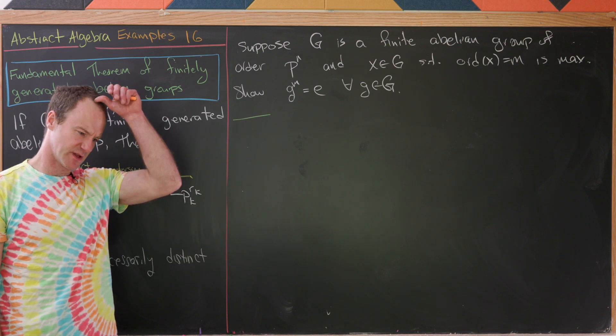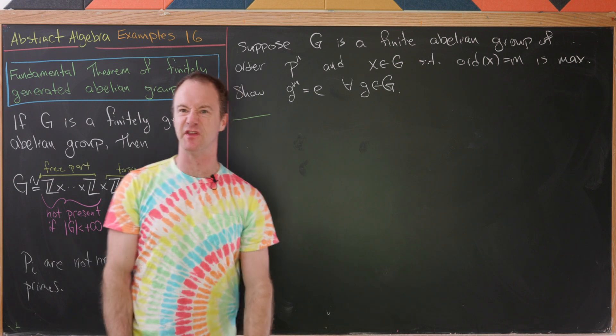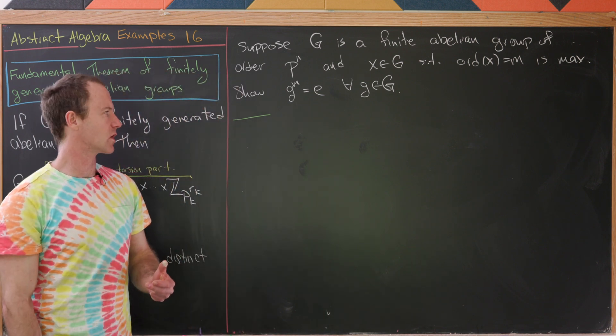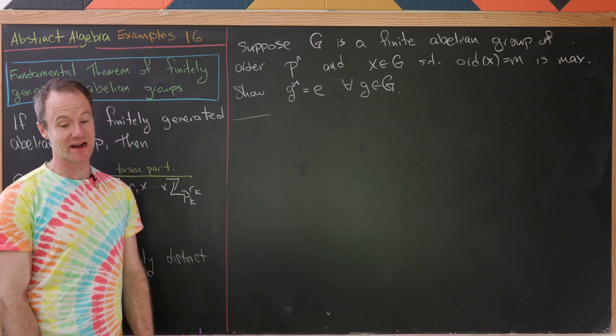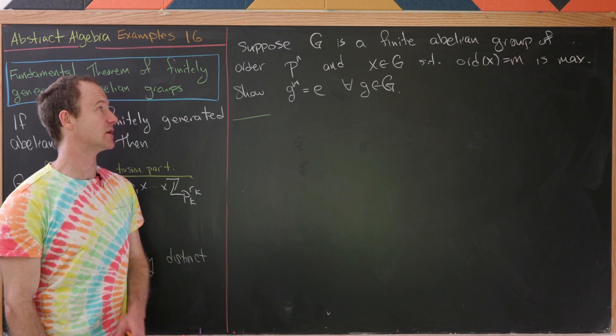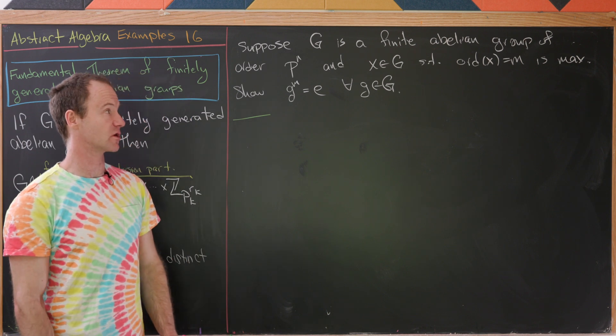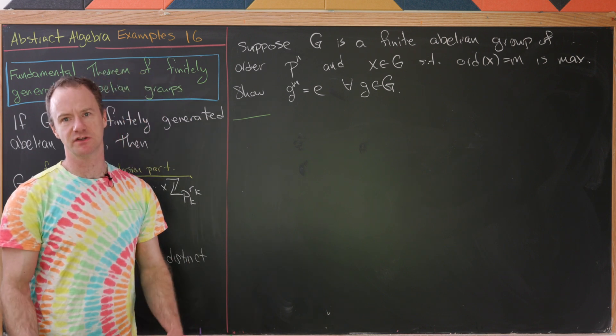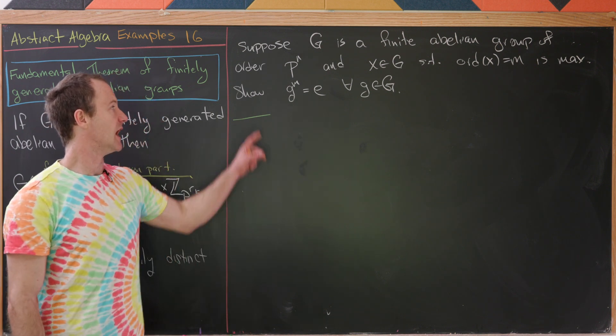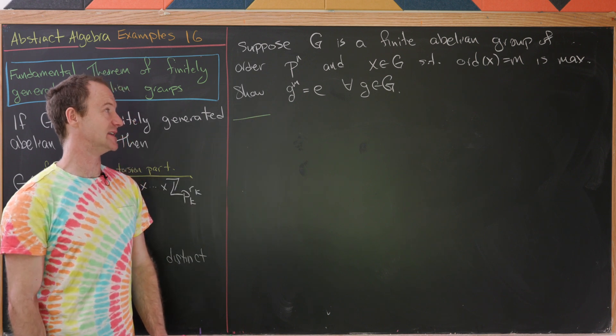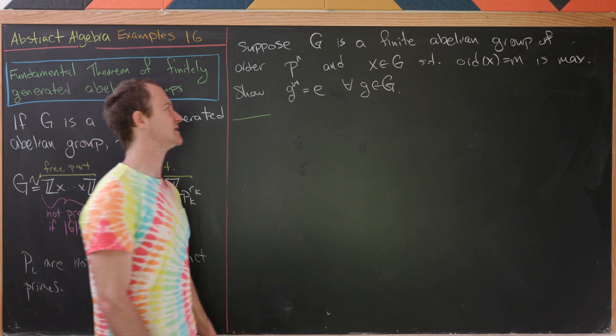Let's do another. So our next example is more like using techniques that were used inside of the proofs. So let's suppose we have a finite abelian group G that's order P to the N where P is a prime. And then X is an element of G where the order of X is taken to be maximal. So it's the element with the largest possible order. And we'll set that order equal to M. And then our goal is to show that G to the M is the identity for all G in G.